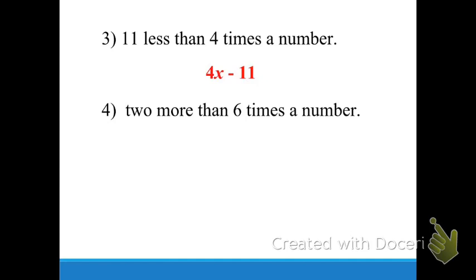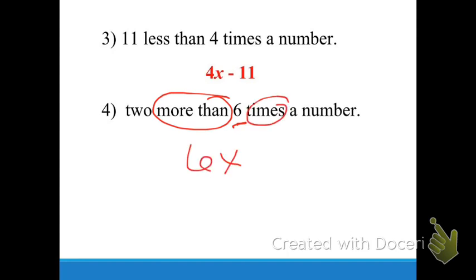'Two more than six times the number.' Now, 'more than' can be considered a turnaround word. So what comes first is six times a number — six X — and then plus two. So the answer is six X plus two. Two more than six times a number.